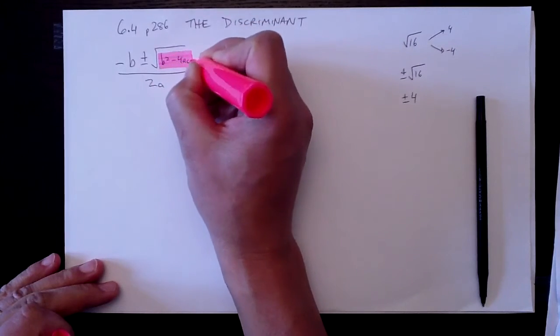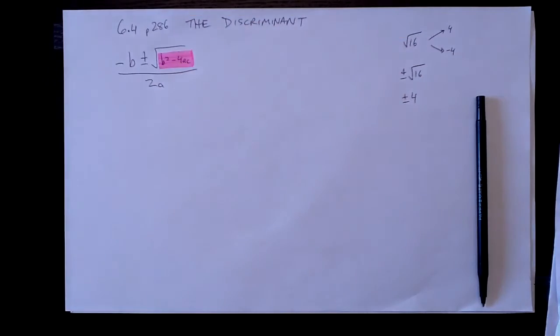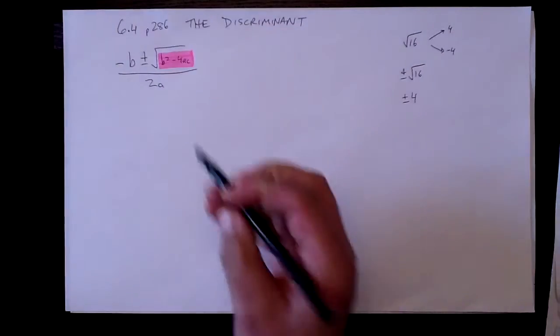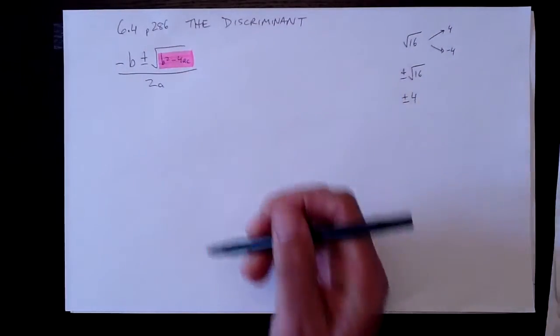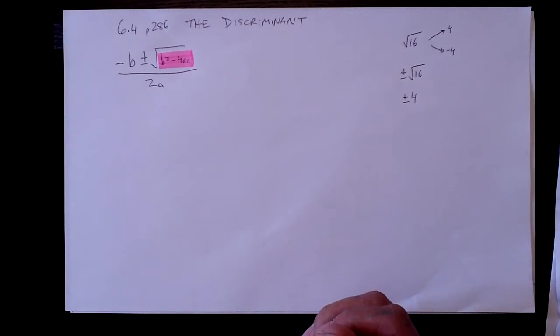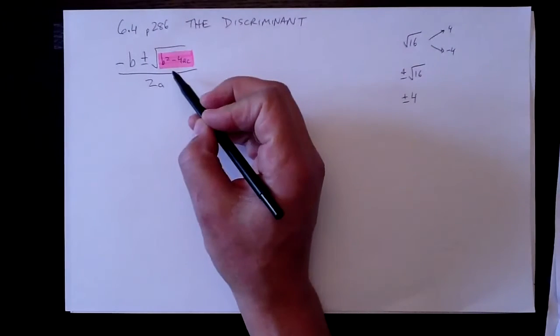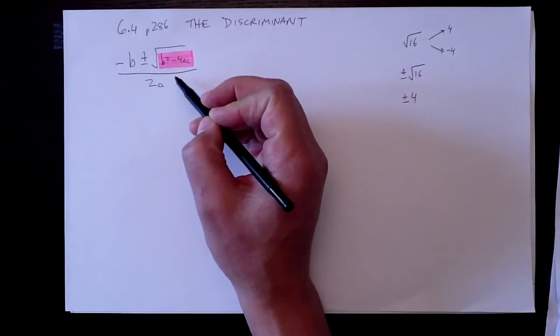Because if that thing in there, b squared minus 4ac, if it's positive, we know there are going to be two solutions. And if it's negative, we'll be trying to take a square root of a negative number and that would be kind of strange. Actually, it'd be kind of impossible. So there wouldn't be a solution at all.